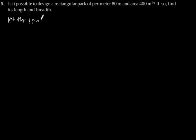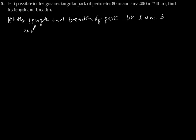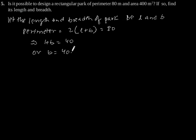Let the length and breadth of the rectangular park be L and B. So, perimeter equals 2(L + B) = 80. This implies L + B = 40, or B = 40 - L.